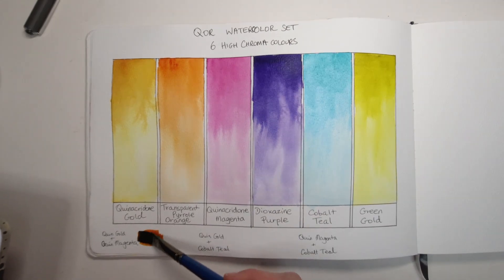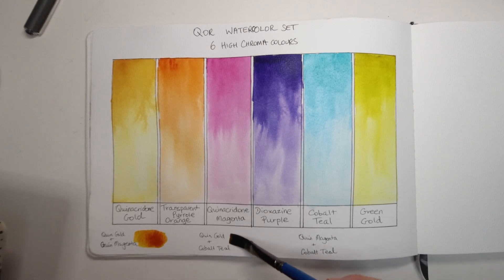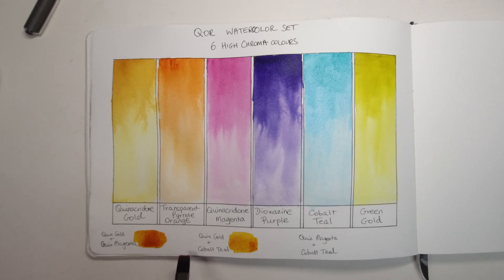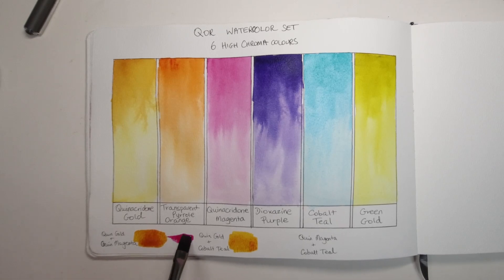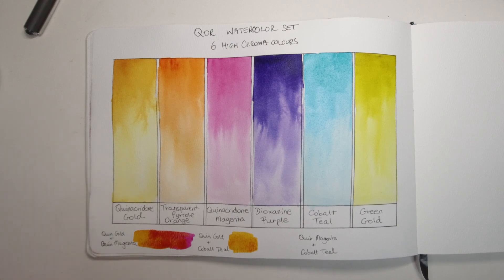In this next section I did the primary triad again, I'm using quinacridone gold, quinacridone magenta and cobalt teal just to see if I can get some secondary colors. I suppose I could have used the green gold but when I'm looking at it just felt a little bit too green so I think the quinacridone gold was a better choice. The first one here I'm mixing quinacridone gold with quinacridone magenta, say that fast five times, and this made a quite vibrant and rich deep orange color.